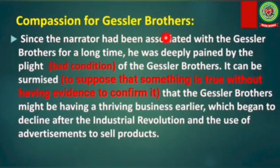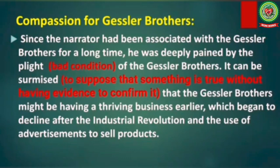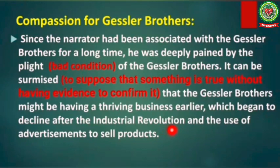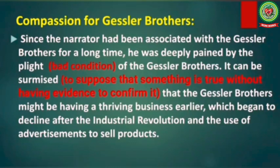The next point is compassion for the Gessler brothers. Since the narrator had been associated with the Gessler brothers for a long time, he was deeply pained by their plight — 'plight' means bad condition. It can be surmised — meaning supposed without confirmed evidence — that the Gessler brothers might have had a thriving business earlier, which began to decline after the industrial revolution and the use of advertisements. The stiff competition from big firms had brought their business to the verge of extinction.